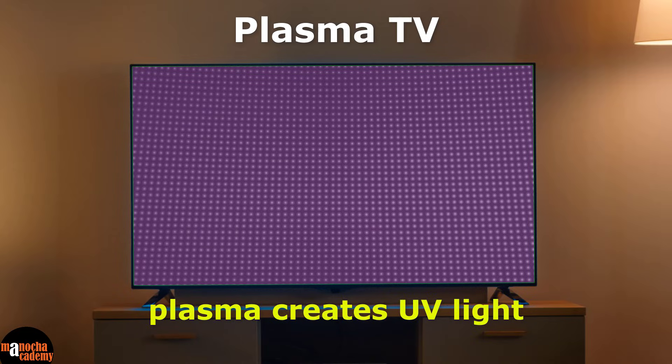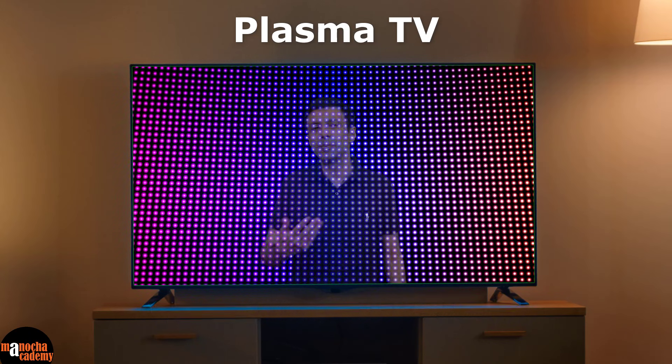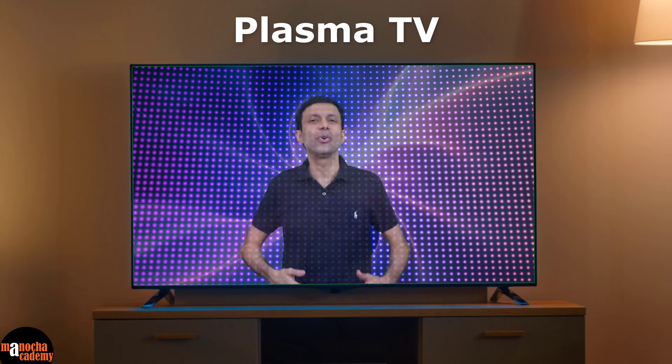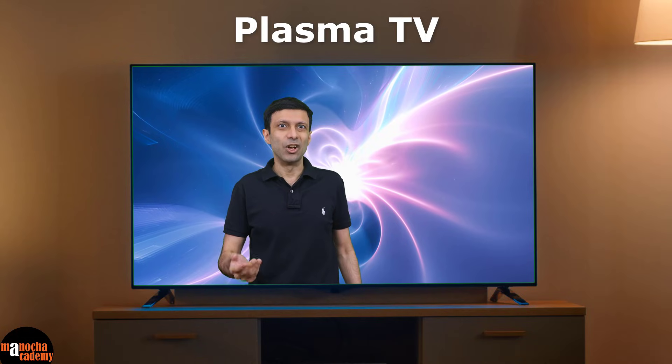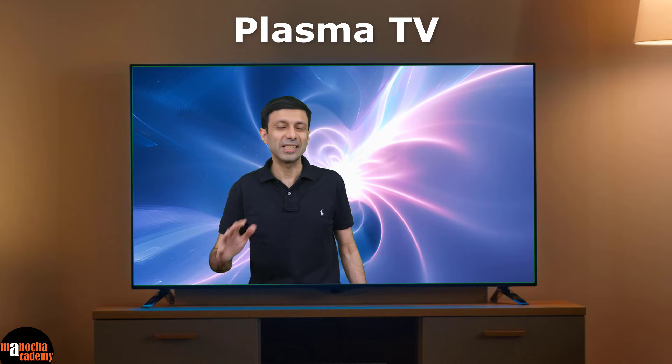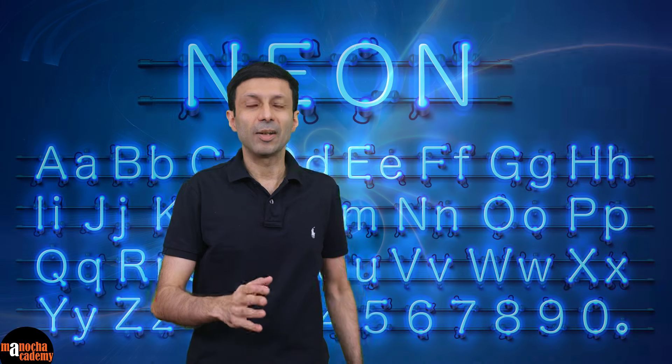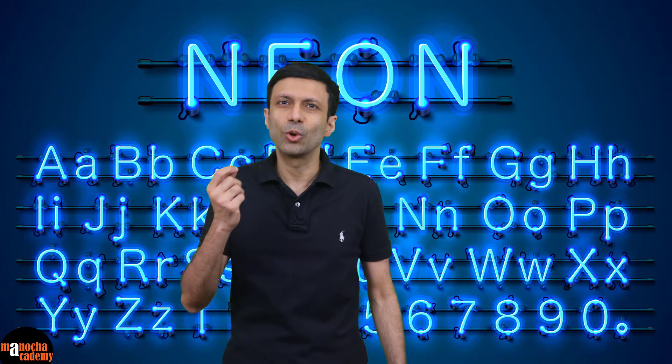This ultraviolet light then strikes a layer of phosphors, which convert it into visible light to create an image. The TV controls the voltage applied to each cell to create a pattern of glowing cells that form your colored image, and you enjoy the TV.